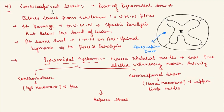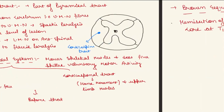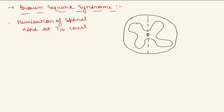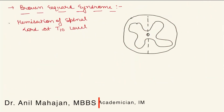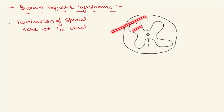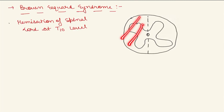So we have studied basically four tracts in the spinal cord. Now, about Brown-Séquard syndrome: due to any cause such as a road traffic accident, hemisection or transection of the spinal cord occurs — specifically at the T10 level. All the tracts we studied — the dorsal column fasciculus gracilis and cuneatus, corticospinal, spinothalamic, and spinocerebellar tracts — would be affected, and the patient would present with corresponding manifestations.